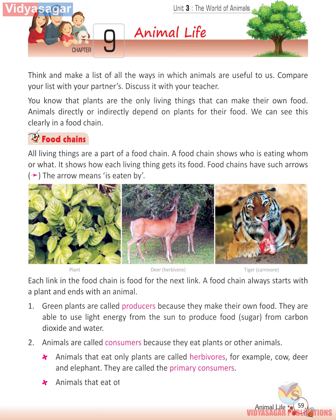Animals that eat other animals are called carnivores — for example, the lion, tiger and eagle. They are called the secondary consumers.